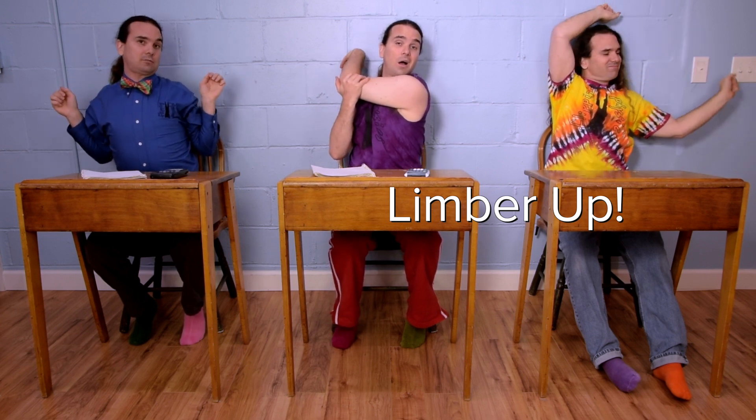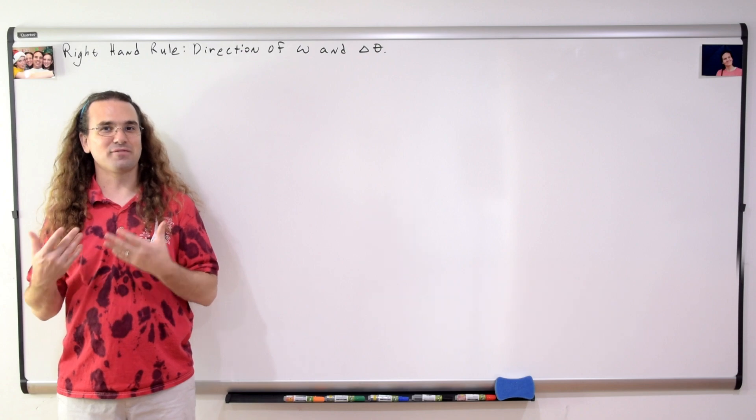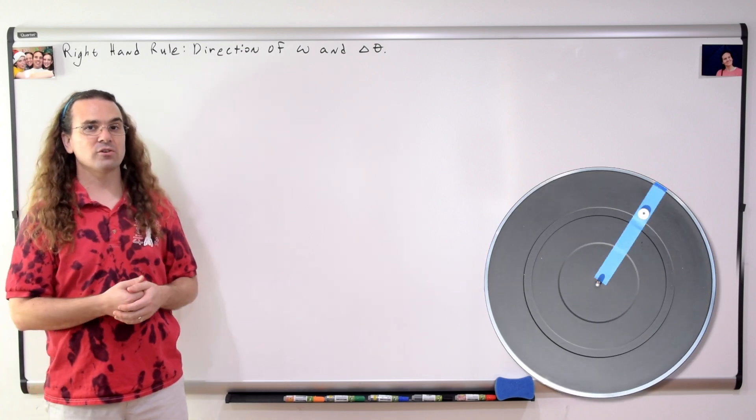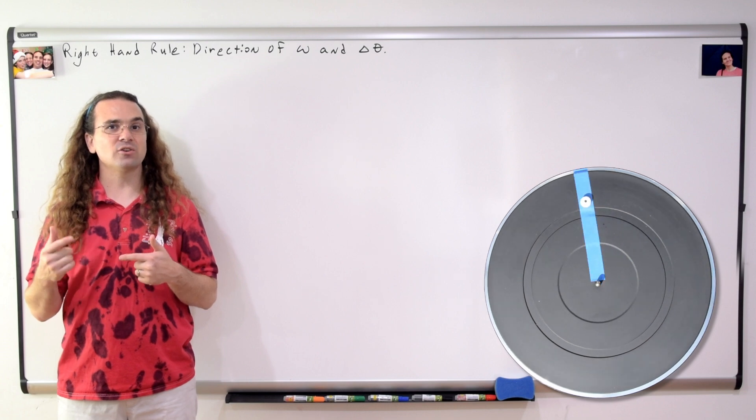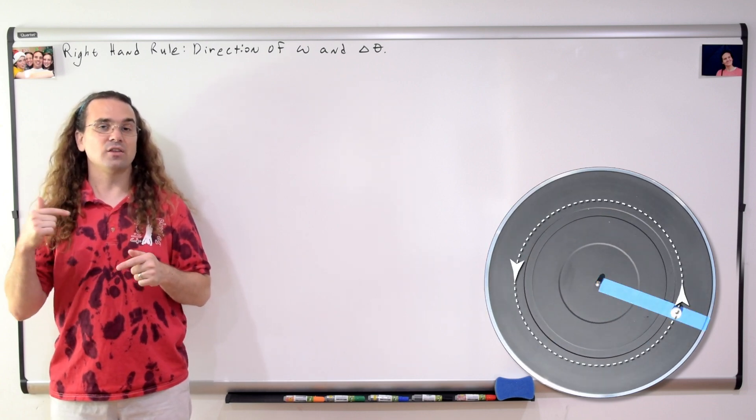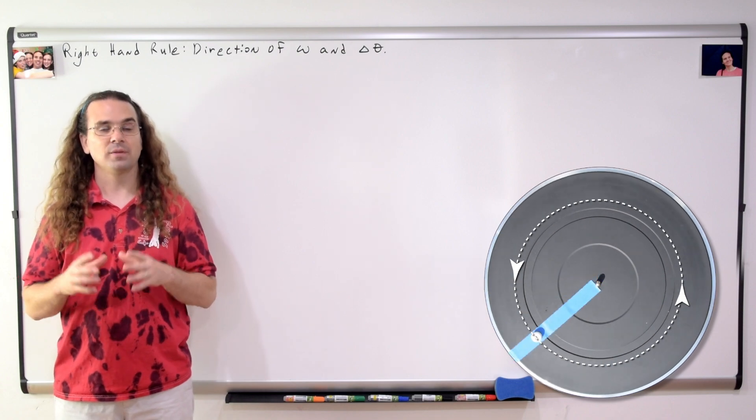Now that we have found our right hand and we are limber, let's do our first example. Here is a mint revolving on a turntable. The mint is revolving in a circle and I have added arrows to the circle to indicate the direction the mint is moving along that circle. Everybody take your right hand and curl your fingers to make them follow the circle through which the mint is moving, and then stick out your thumb. Your thumb is pointing in the direction of the angular velocity and angular displacement of the mint and of the turntable.